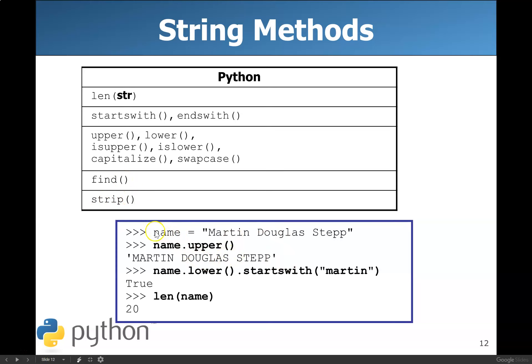So here's a couple examples down here. If our initial variable is Douglas, Martin Douglas Stepp. It's just a string. It's characters, it's words. If I do name.upper, so you have to do a different convention here. It's the variable, and it's called dot notation. So the variable dot, upper, and then nothing in the brackets. Nothing in the brackets ever for these ones.